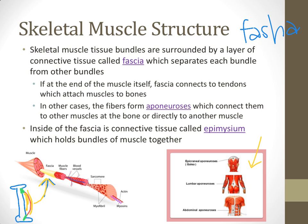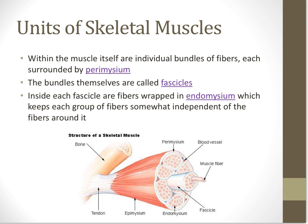As we zoom in on skeletal muscle tissue, we can see the fascia. Inside the fascia is another layer of connective tissue called the epimycium. You can see the bone, the tendon, and then the fascia connecting to the tendon, with the epimycium beneath. Epi means around, so the epimycium surrounds the entire bundle of muscle fibers. Inside of that, we have a smaller layer called the paramycium, which surrounds each individual bundle. So epimycium surrounds all bundles; paramycium surrounds an individual bundle.